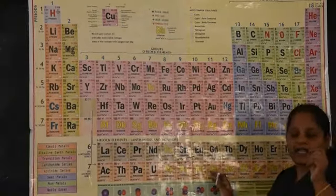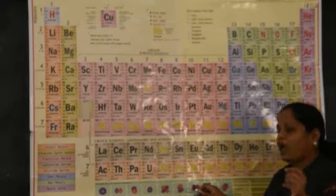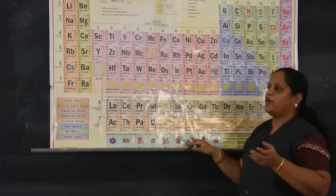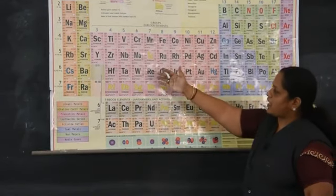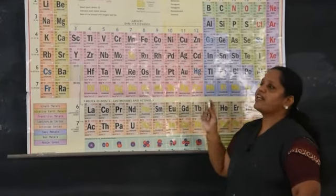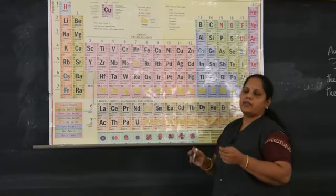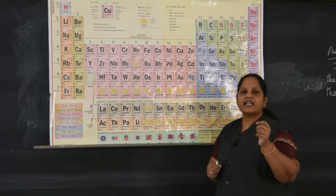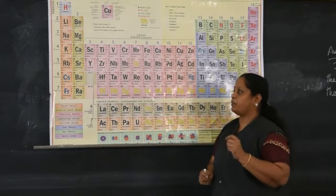There are totally 118 elements. Out of 118, 94 are naturally occurring on earth. The remaining are synthesized in the laboratory or are radioactive elements. These 118 elements are further classified into S block, P block, D block, and F block elements.